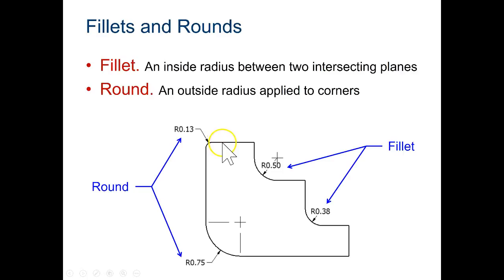Fillets and rounds. This is where you have a 90 degree angle. If it's external, it's called a round. And if it's internal, it's called a fillet. And those are described with a radius. Again, we like to use the radius with the center point. That makes the most sense.